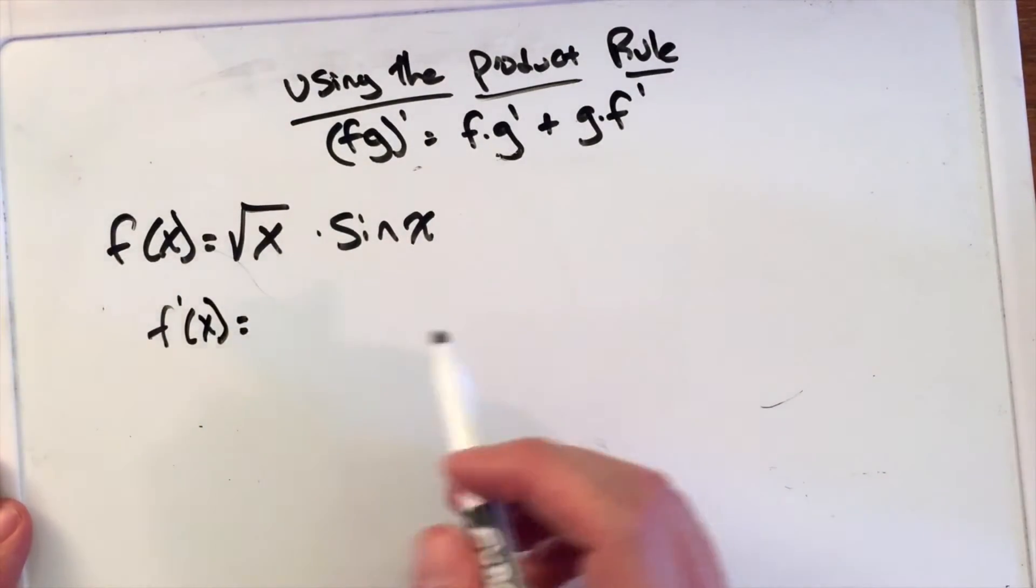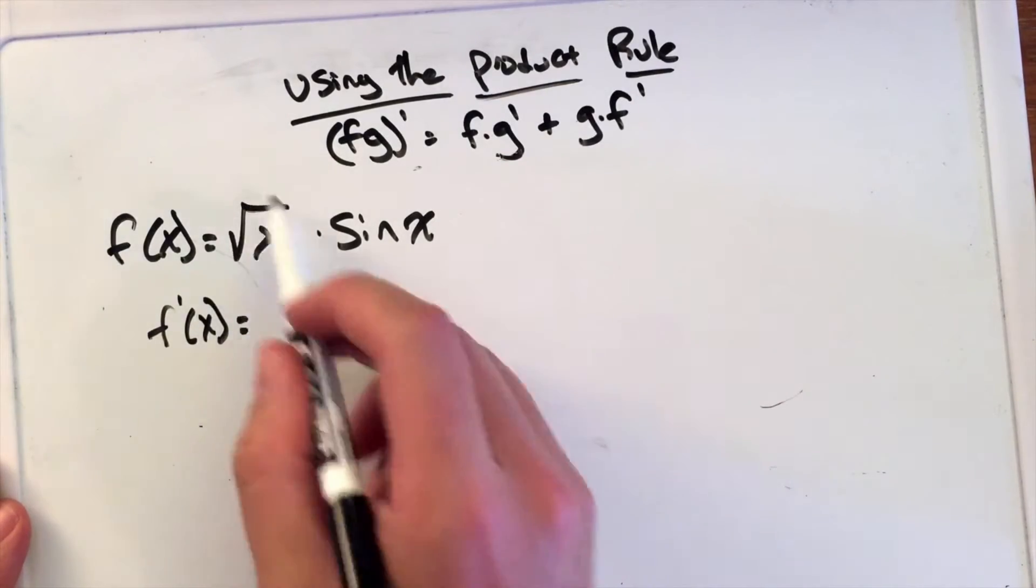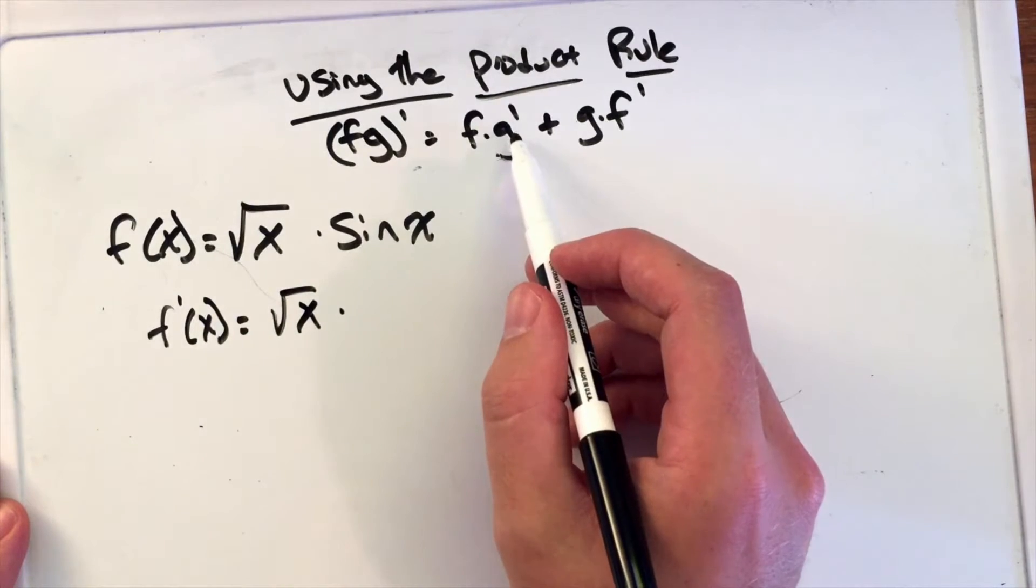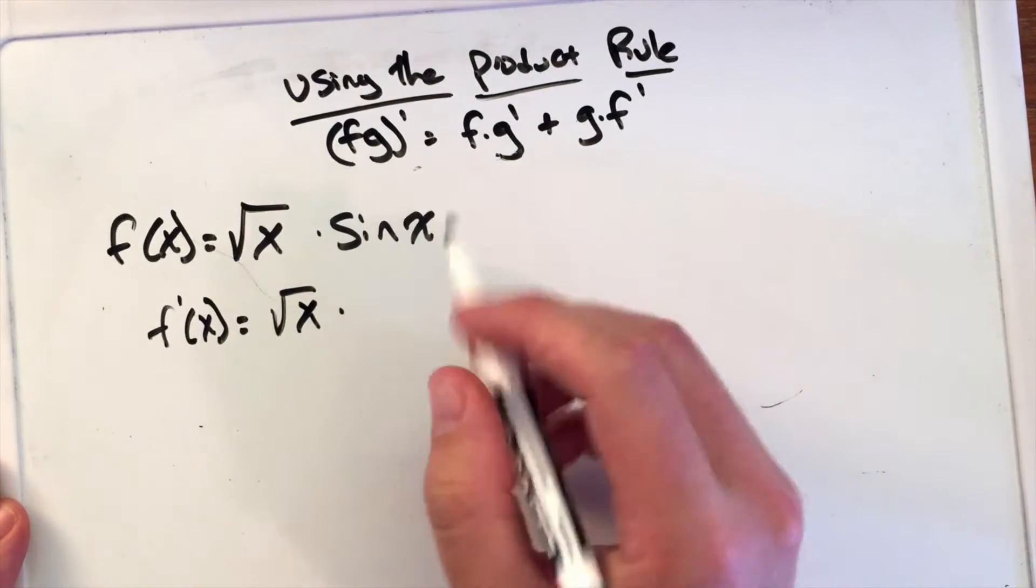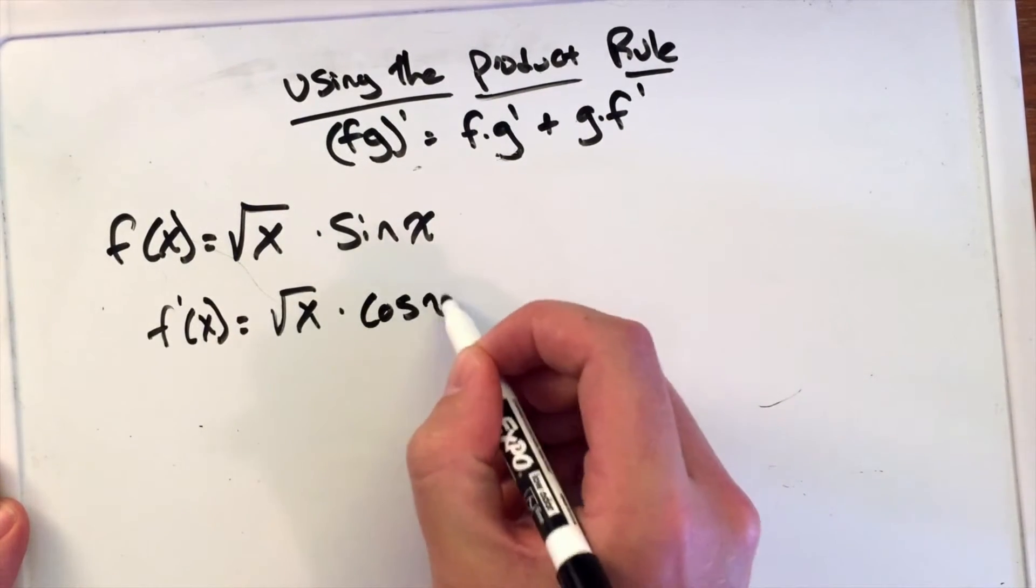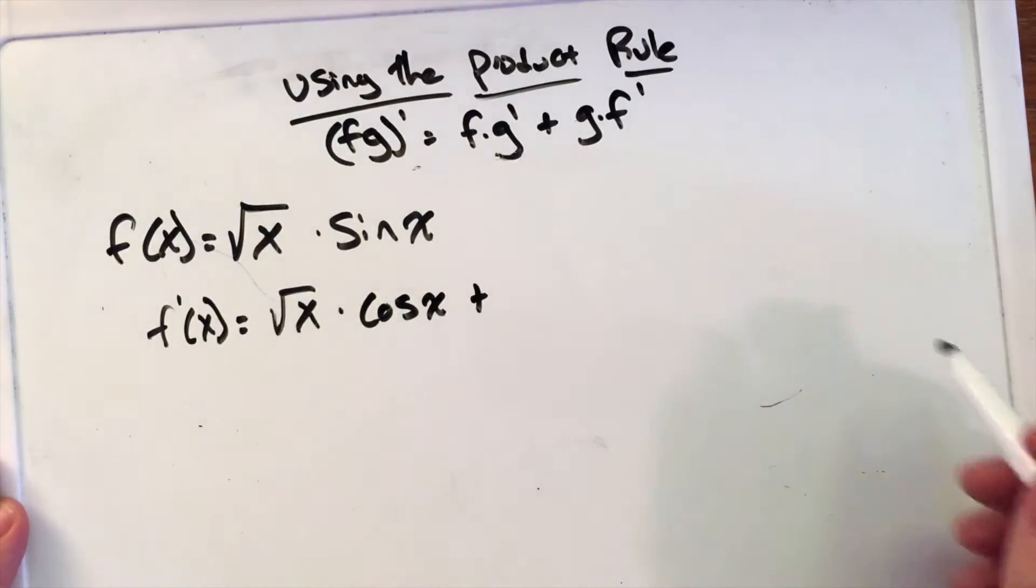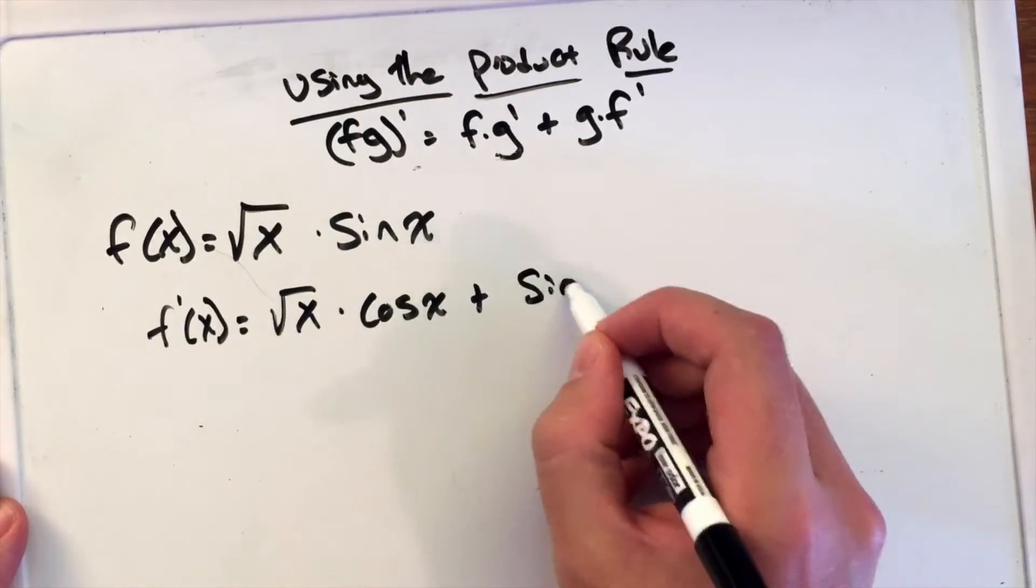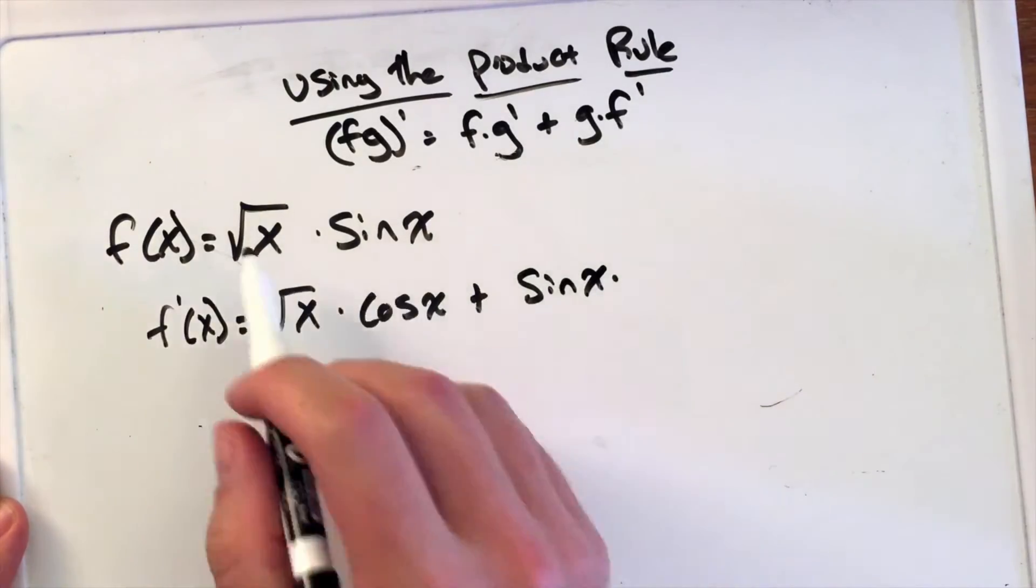f'(x) equals the first part, √x, times the derivative of the second part - the derivative of sin(x) is cos(x) - plus the second part, sin(x), times the derivative of the first part.